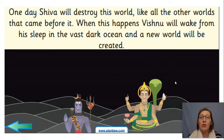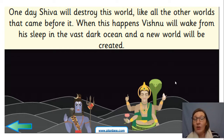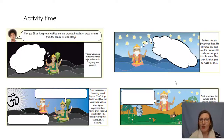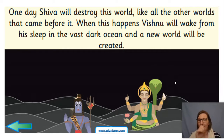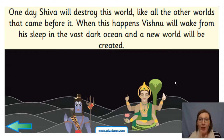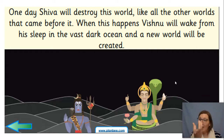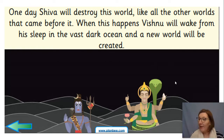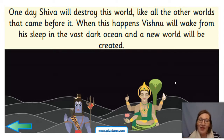One day, Shiva will destroy this world like all the other worlds that came before it. When this happens, Vishnu will wake from his sleep in the vast dark ocean and a new world will be created. Each time that Shiva appears and Vishnu wakes up again, the same thing will happen again. Brahma will come out of a lotus flower from Vishnu's belly button and open up, and then he will create the heaven, the earth and the sky, and he will create animals and the plants. And that will happen again and again and again within the Hindu religion.